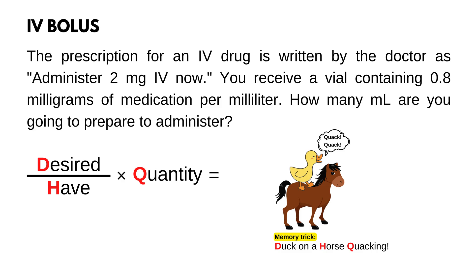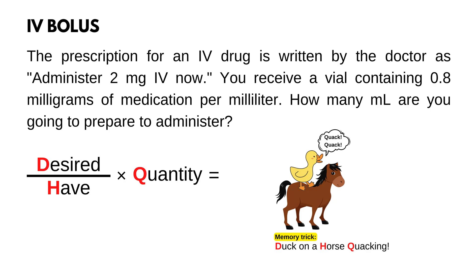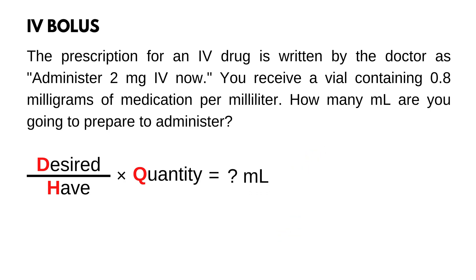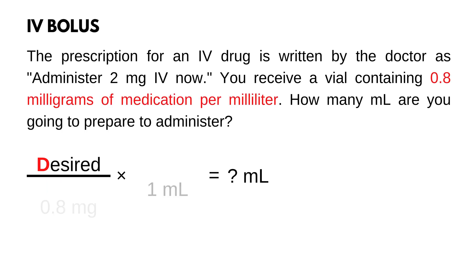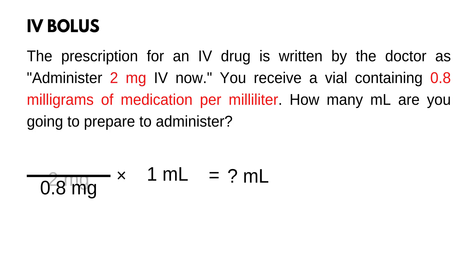First, set up our formula with the unit answer. For this problem it is milliliters, because it is asking how many milliliters are you going to prepare to administer. Now that the formula is organized, we need to plug in the numbers. Start with half and quantity — for this problem it is 0.8 mg per milliliter. For desired, plug in the doctor's order: 2 mg.